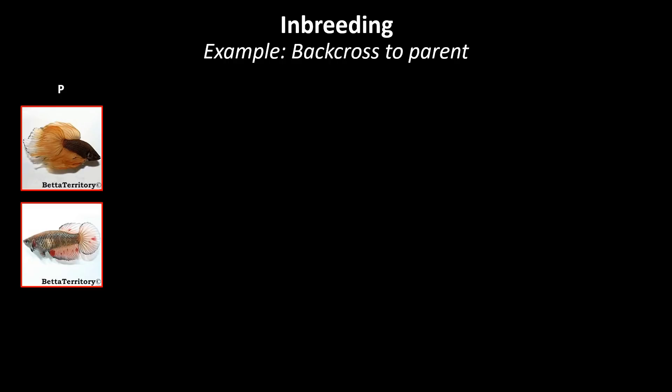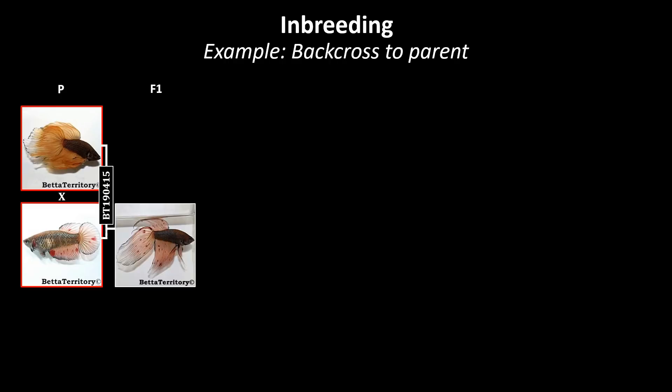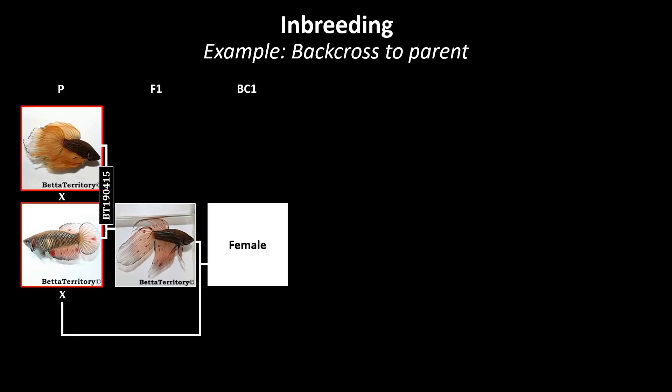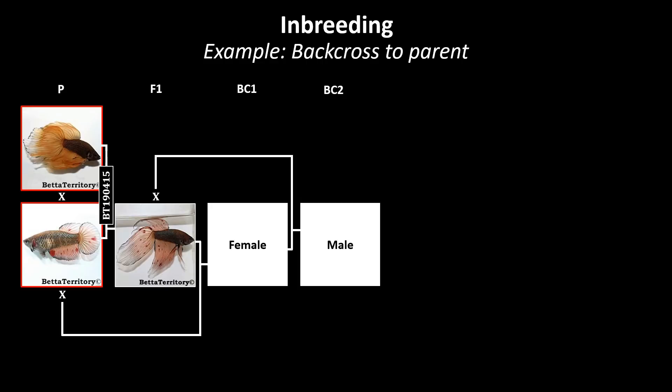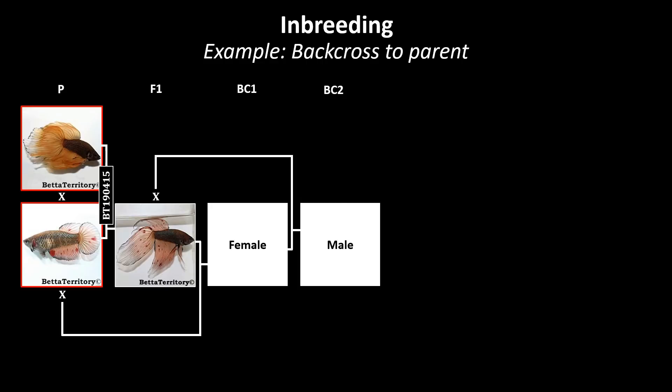Here is an example of what inbreeding by backcrossing would look like. The F1 offspring of two unrelated parents — in this example a male — will be crossed back to the mother. A female offspring of this cross then again is crossed back to the father, and this process can be repeated for multiple generations. The different generations here can be indicated by the abbreviation BC for backcross.